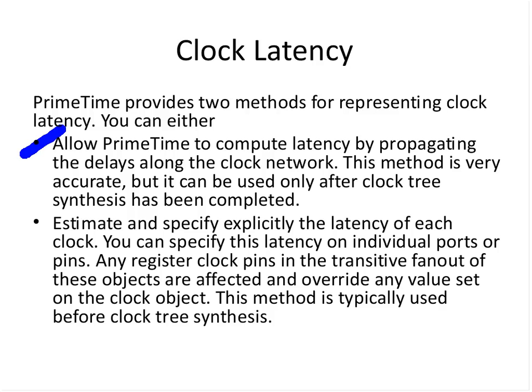If you want to estimate and apply any clock latency, there are two types. First, for post-layout: we can allow prime time to compute latency by propagating the delays along the clock network — this is accurate but only applicable if you have accurate parasitics, which you have only after the design has been placed and routed. Second, the estimation approach for pre-layout: we can estimate and explicitly specify the latency of each clock on individual ports, any register clock pin, or the transitive fan-out. This is typically used before clock tree synthesis.